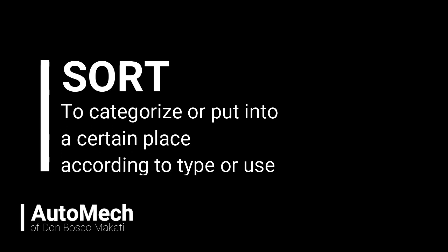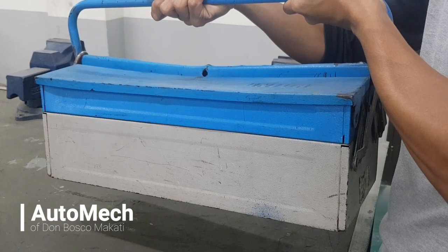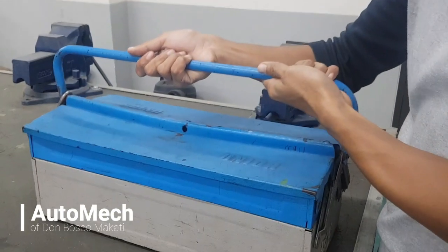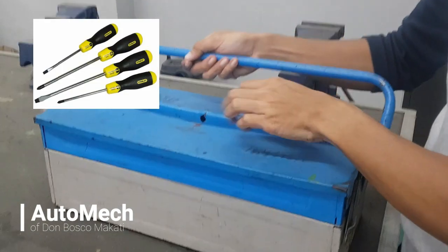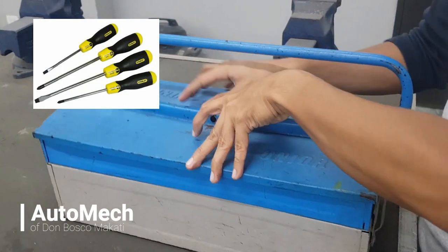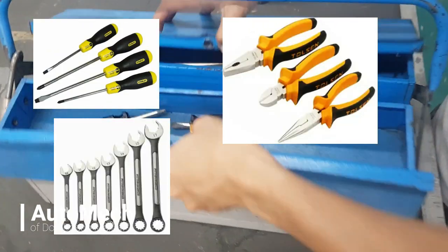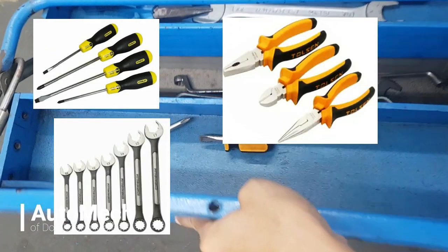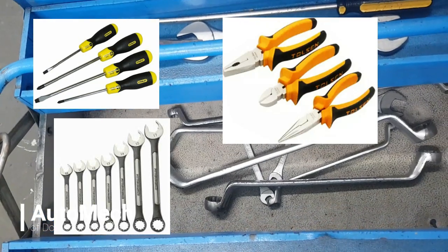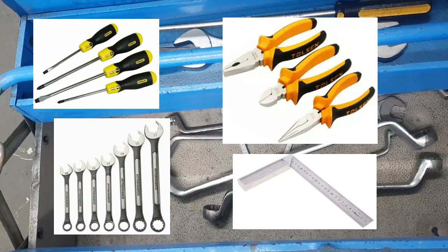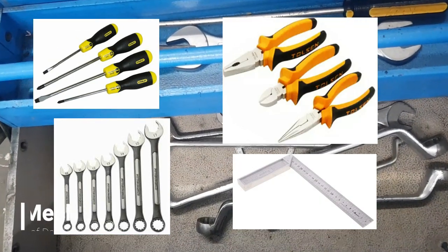First is sort, which simply means to categorize or put into a certain place according to type or use. One way of sorting in a toolbox is by separating the screwdrivers, pliers, wrenches, and even measuring tools like steel rule or try square, as they all have different purpose and use.